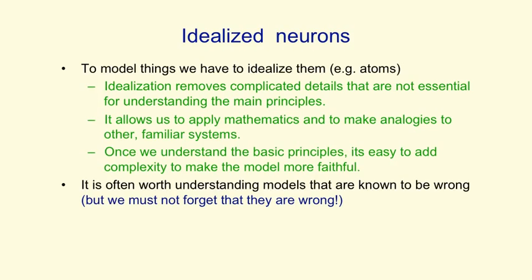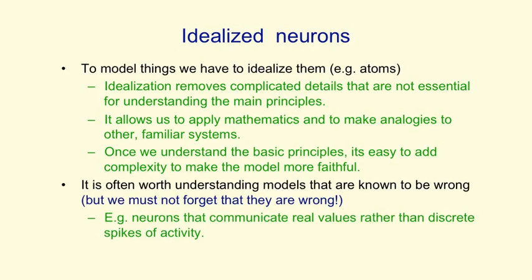Of course, we have to be careful when we idealize something, not to remove the thing that's giving it its main properties. It's often worth understanding models that are known to be wrong, as long as we don't forget they're wrong. For example, a lot of work on neural networks uses neurons that communicate real values rather than discrete spikes of activity. And we know cortical neurons don't behave like that, but it's still worth understanding systems like that. And in practice, they can be very useful for machine learning.